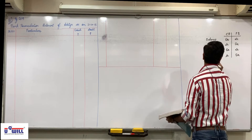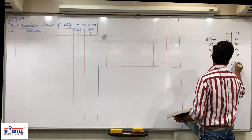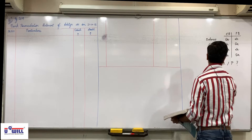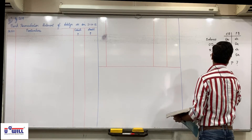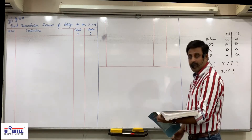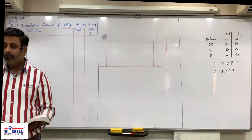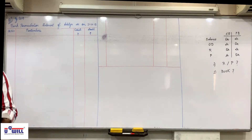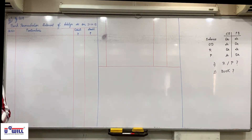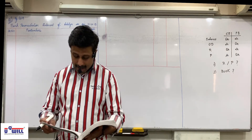Step one: identify whether it is a receipt or payment. Step two: identify in which book it is not recorded. The cash book of Aditya shows bank balance of rupees 9,000 on 31/10/15 — underline 'cash book' and underline 'balance'.